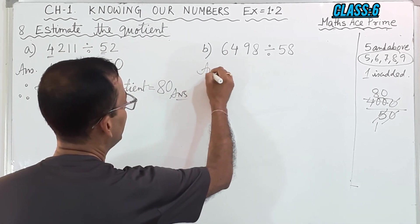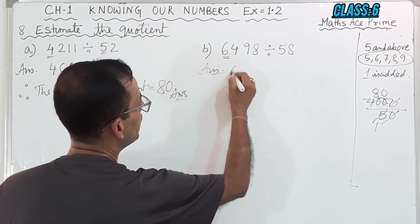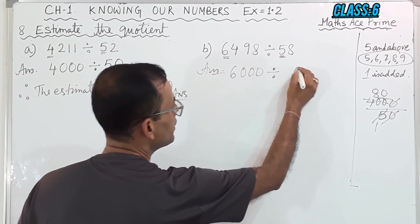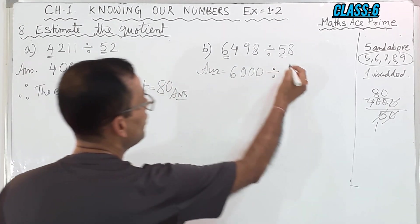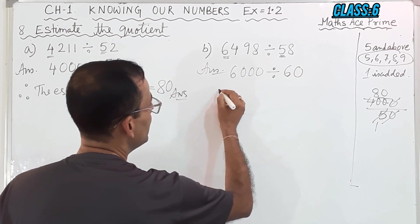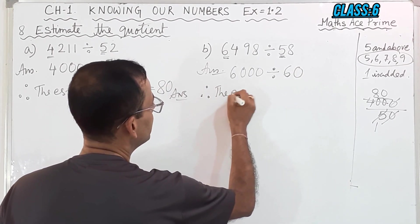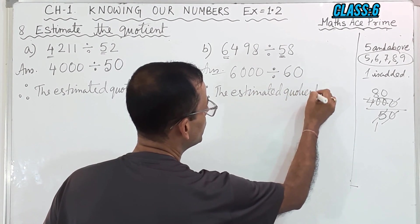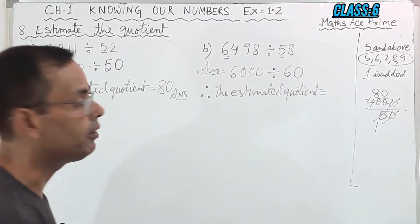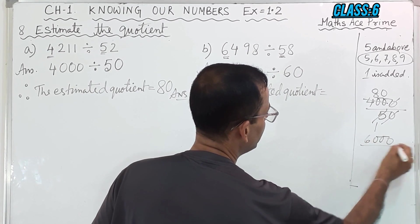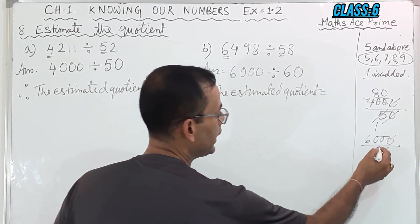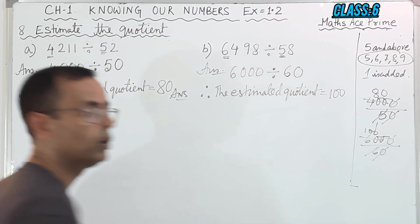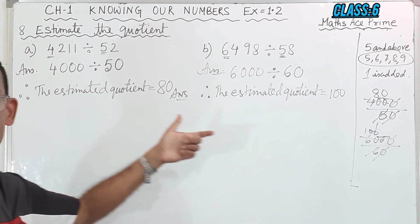Then next one: we will round off here, and it will become 6,000, divided by — now round off here: 8 will become 0, and this 5 will become 6. So 6,000 divided by 60. Cancel two zeros: 6, 1's are 6 and 6, 1's are 0, so 100. Therefore the estimated quotient is 100. I hope question number 8A and 8B you have understood.